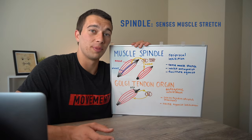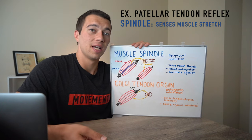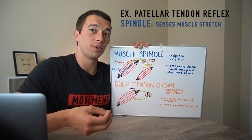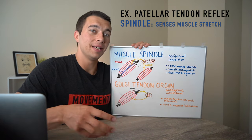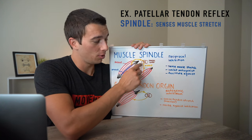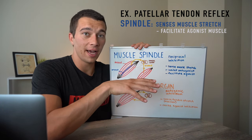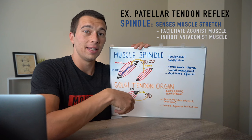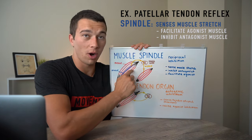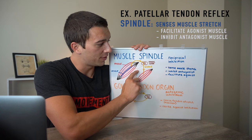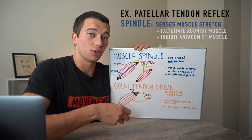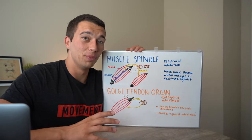A common test for the muscle spindles is the patellar tendon reflex. We do a quick stretch of the patellar tendon, which stretches the quadricep muscle. The body senses that stretch from the muscle spindles of the quad and sends a signal to activate the quads to kick the leg out, as well as to inhibit the hamstrings from keeping the leg down — activating the quadricep through that dotted line, facilitating the agonist, while also inhibiting the hamstring to allow the leg to kick out.